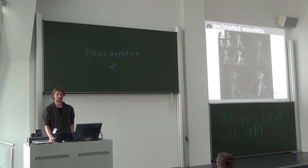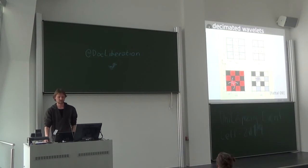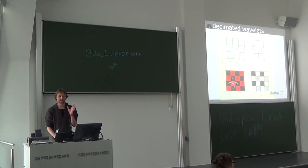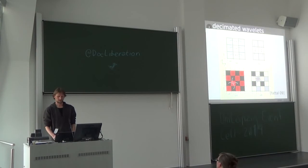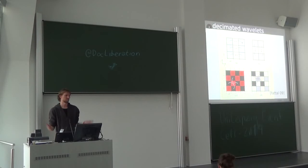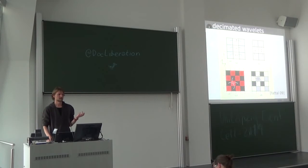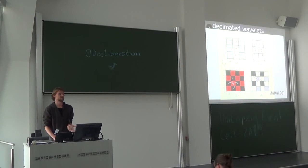Now you have your wavelet transform. How do you compute those differences? There are a couple of possibilities. One is the simple tensor product version — you just leave away every other column in your picture, take those as your coarse representation, and in the prediction step you take the left and right neighbors, interpolate, and take the difference. Then you do the same for the y direction on the resulting picture. This scheme is referred to as the CDF wavelet.